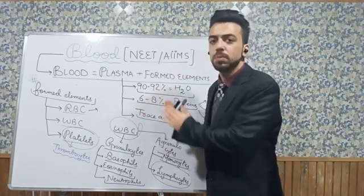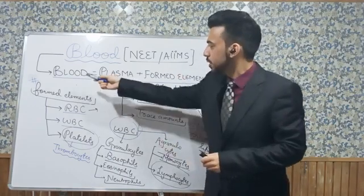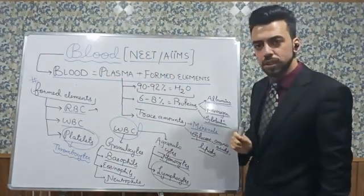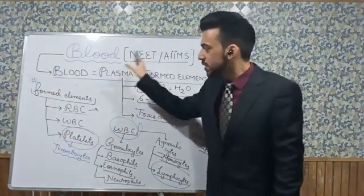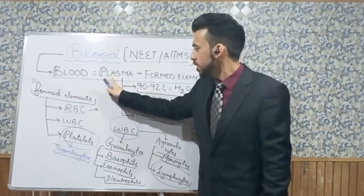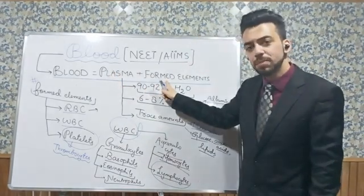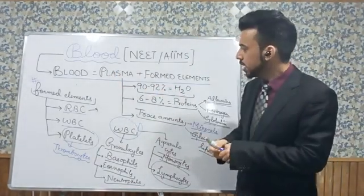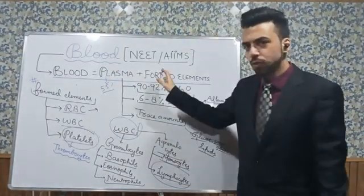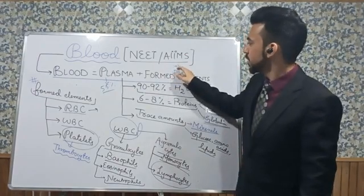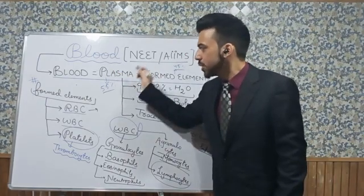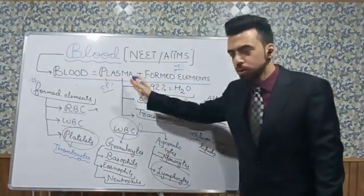To understand the composition of blood, here is an equation: Blood equals plasma plus formed elements. Blood constitutes of two parts — one is the plasma and one is the formed elements. The plasma is about 55% and the formed elements are about 45%. So the majority portion of blood is contributed by the plasma.